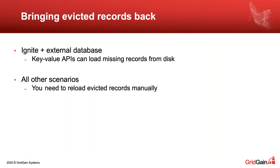To conclude on this technique, keep in mind what happens when your cluster capacity is recovered and you need to deal with already-evicted records. If Ignite is tethered together with an external database using the cache store interface and you use key-value APIs like cache.get and cache.put, then cache.get queries can load missing records from your external database. But if you're using SQL, scan queries, continuous queries, or anything else, Ignite will not be able to read through those records from an external database — that will be your responsibility to reload them.